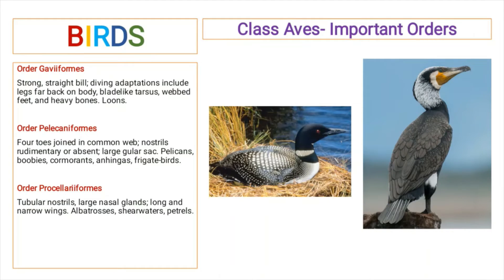Order Pelecaniformes includes birds that have four toes joined to form a common web. Their nostrils are rudimentary or absent, and they have a large gular sac. These include pelicans, boobies, cormorants, and frigate birds.